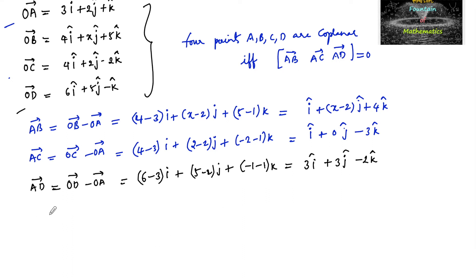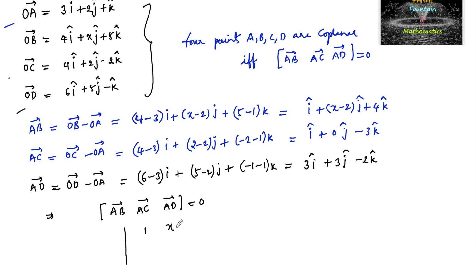Since the four points are coplanar, we set the scalar triple product [AB, AC, AD] = 0. In determinant form: AB has scalar components 1, (x-2), 4; AC has components 1, 0, -3; and AD has components 3, 3, -2. This equals 0.